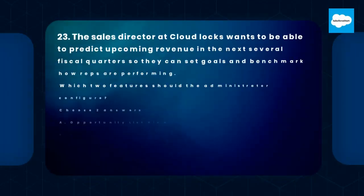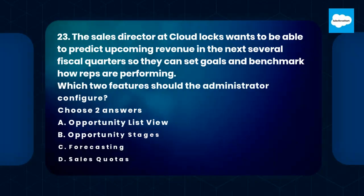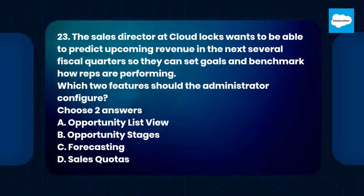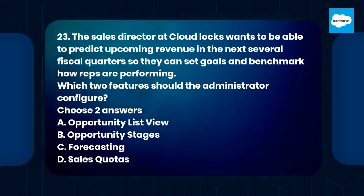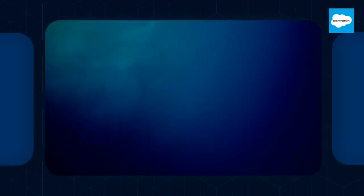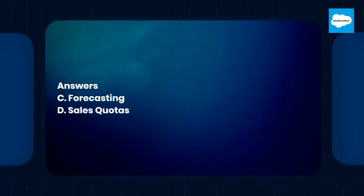Question 23. The sales director at CloudLocks wants to be able to predict upcoming revenue in the next several fiscal quarters so they can set goals and benchmark how reps are performing. Which two features should the administrator configure? A. Opportunity List View. B. Opportunity Stages. C. Forecasting. D. Sales Quotas. Answers: C. Forecasting. D. Sales Quotas.